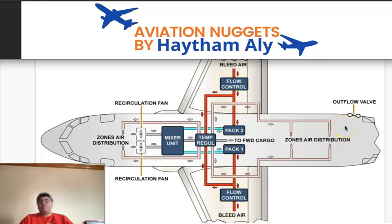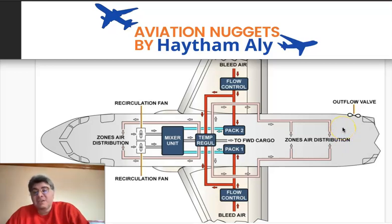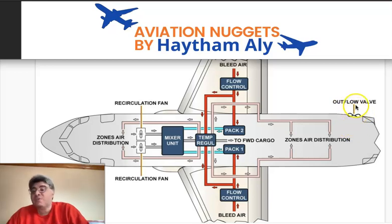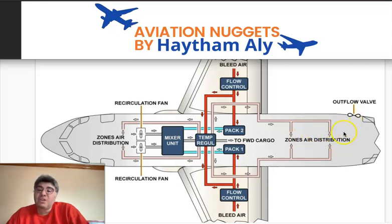The aircraft can climb to 35,000 feet while the cabin climbs only to approximately 8,000 feet. The pressurization system controls both the rate of cabin climb and the cabin altitude. The outflow valve is controlled to regulate how much conditioned air escapes from the fuselage — outside altitude may be 30,000 feet but inside cabin altitude is maintained at 8,000 feet, so there is high pressure inside versus very low pressure outside.